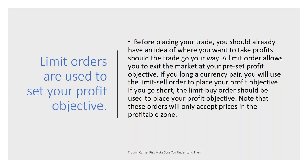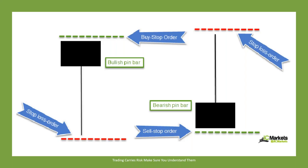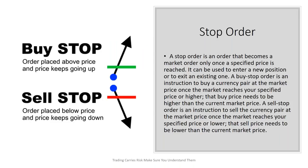Before placing your trade, you should already have an idea where you want to take profit should the trade go your way. A limit order allows you to exit the market at a pre-set profit objective — if you're long a currency, use a limit sell order for your profit objective; if you go short, a limit buy order. You don't need the euro-US dollar to rally from 121.50 to 122.50 — that's very unlikely. But if you set a reasonable profit point at say 121.85, the minute it hits 121.85 it closes your position, takes your profit, and puts the money in your account.